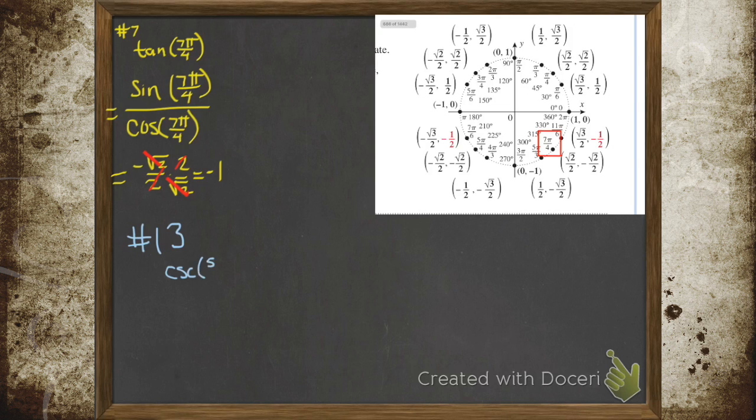Like in number 13, we're looking at the cosecant of 5π/6. But you know the reciprocal identity. The cosecant is 1 over the sine of 5π/6.